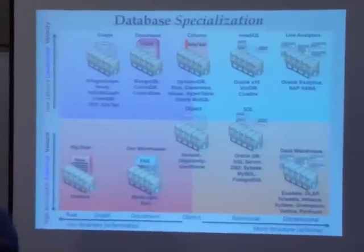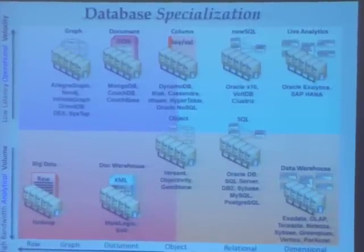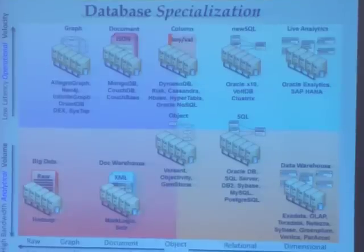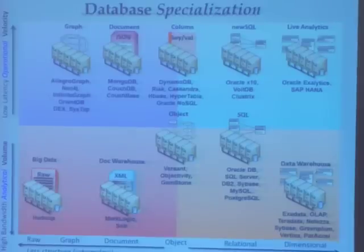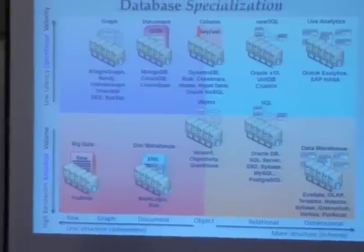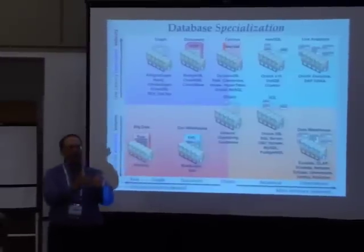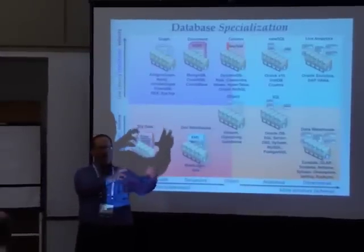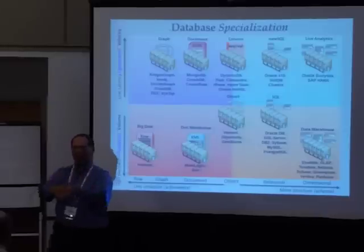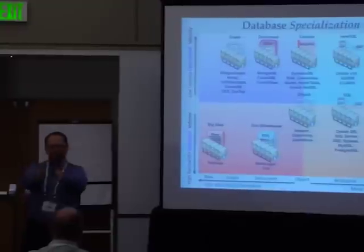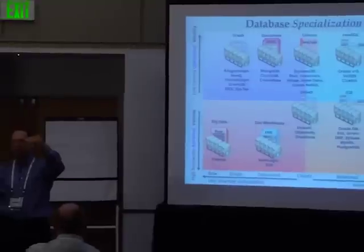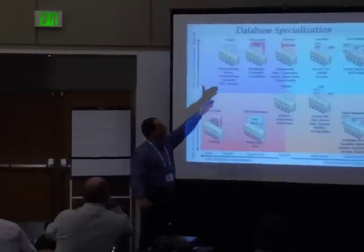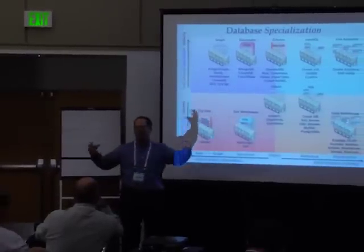Column and key-value stores — I bring these together because columnar NoSQL is very different from the columnar data warehouse. This columnar NoSQL is all about multi-dimensional keys: you have a key, a time dimension as a segment of your key, and a column family as another segment. So you have multiple dimensional keys that allow you to hierarchically dig down into your documents. Really all Cassandra and HBase is, is a sparse, multi-dimensional key-value store.